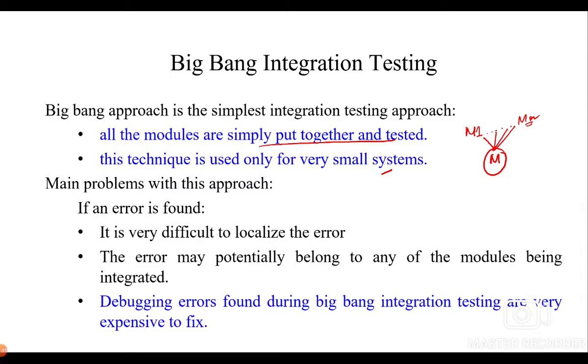Main problems with this approach arise if there is an error. If an error is found, it is very difficult to localize that error, that means it becomes difficult to identify the location of the error which has been detected. The error may potentially belong to any of the modules being integrated and debugging errors found during big bang integration testing are very expensive to fix because this relates to the disintegration of the entire project once again and then identifying each of the modules and testing those modules separately and then localizing that error. Hence it becomes a very expensive process.